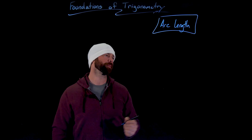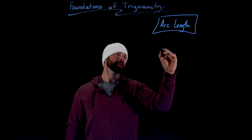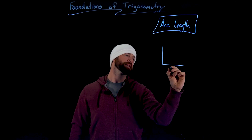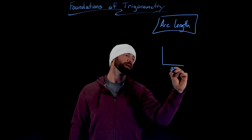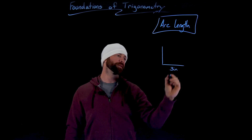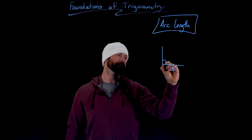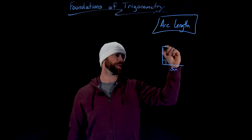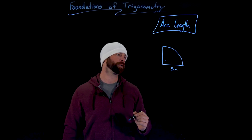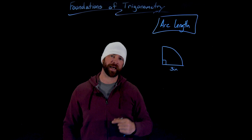For instance, let's do something that's not super complicated. Let's create a 90-degree angle with a 3-inch radius — 3 inches and 3 inches — and we want to know, if this is a perfect circle, the length of that arc.